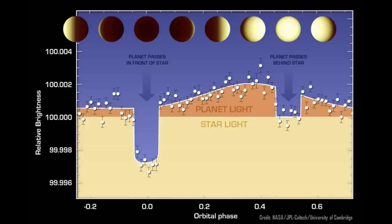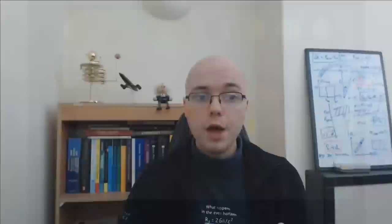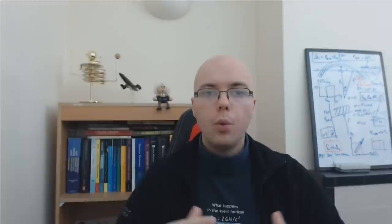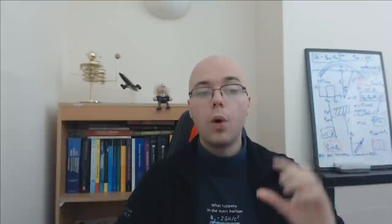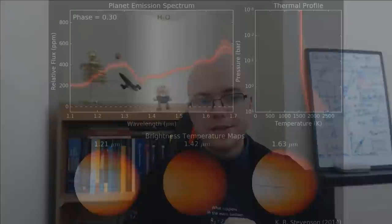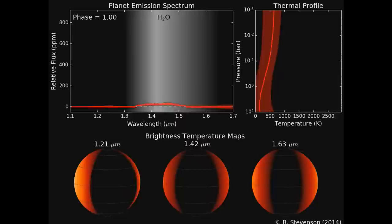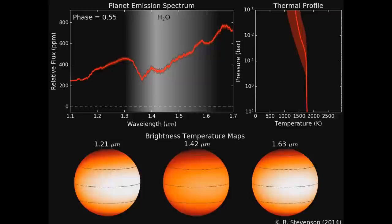If we subtract the light from the planet from the light from the star, we can get measurements of the thermal emission of the planet from its day side. This is really complementary to transmission spectroscopy, which probes the boundary between the day and the night side — because most of these planets are tidally locked. As the planet goes in front of the star, the side facing us is the night side; the side facing the star is the day side. So what we see in transmission is the boundary between the day and the night.